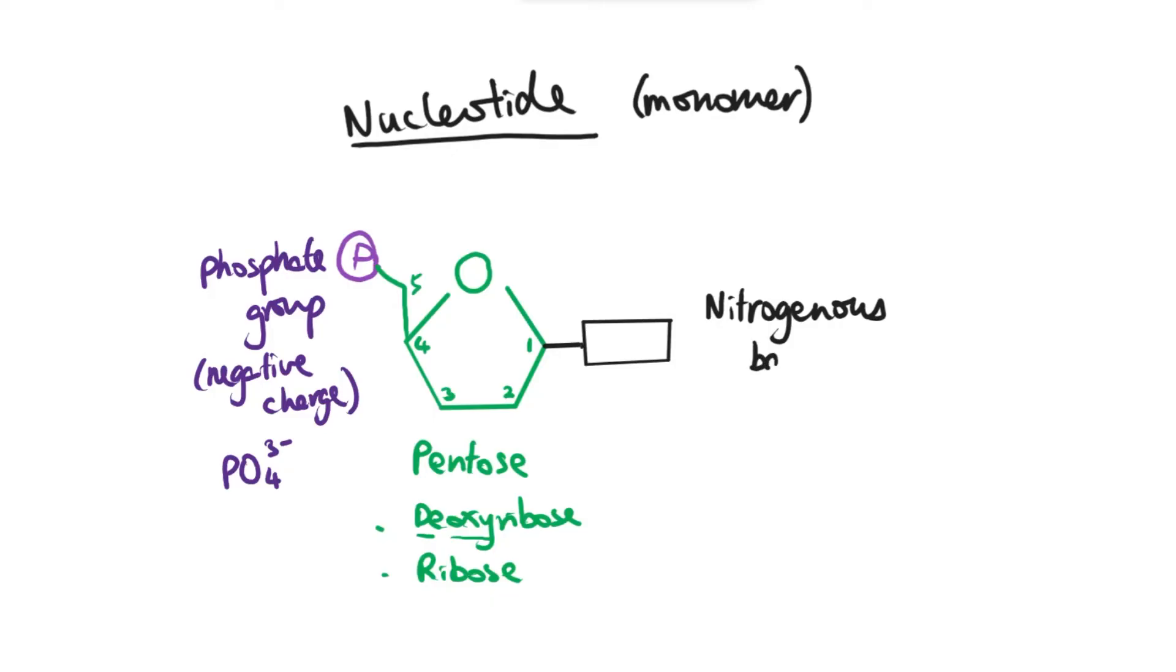And finally on the right-hand side here that is attached to carbon 1, that one is actually showing a nitrogenous base. As the name implies, a nitrogenous base contains nitrogen. Even though here I've just drawn a rectangle, in reality they are actually made up of more complex structure, there's like carbon rings to it.